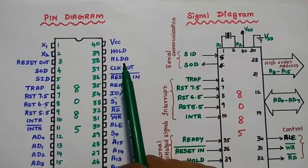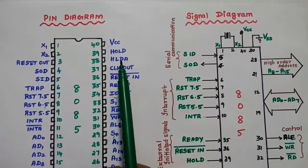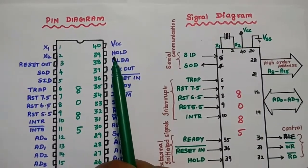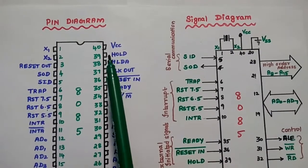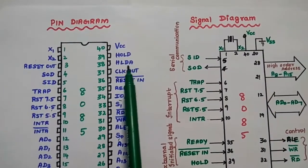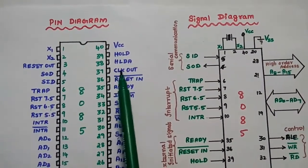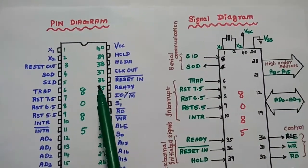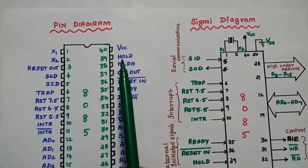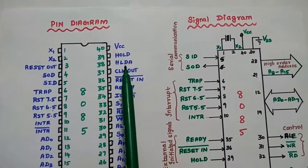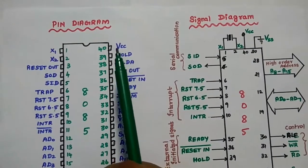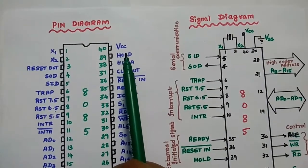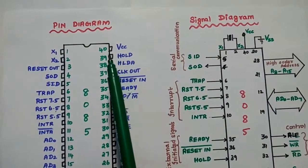Next are HLDA and Hold. HLDA is the acknowledgement signal for Hold. Hold is used to indicate to the processor that another external device is waiting to use the address and data bus, requesting the processor to hold its operation. If the processor accepts this request, it sends the acknowledgement HLDA. The last pin, the 40th pin, is VCC — where we connect the plus 5V power supply.